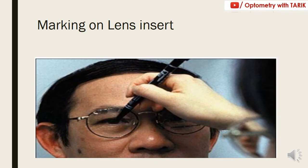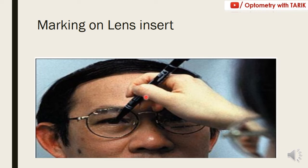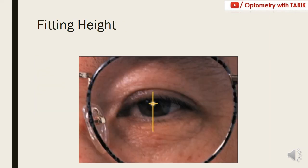Next is marking on the frame insert, which is very important because this marking will be used for verification against the lens layout. Sit right in front of the patient at about one arm's length (approximately one meter). Ask the patient to look from their right eye to your left eye, and close your right eye to avoid parallax error. Using a fine felt-tip marker, mark the pupillary center on the frame. Repeat the same for the left eye — ask the patient to look to your right eye, close your left eye, and mark again.